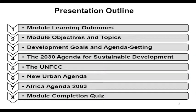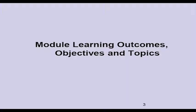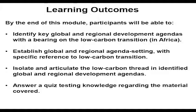Our module will be recorded in the following main topics. I will start with our module learning outcomes, then module objectives and topics. I will focus on development goals and agenda setting, and the 2030 Agenda for Sustainable Development, including the 17 Sustainable Development Goals. I will look at the United Nations Framework Convention on Climate Change — the UNFCCC. By the end of this module, participants will be able to identify key global and regional development agendas with a bearing on low-carbon transition in Africa or globally.